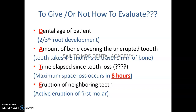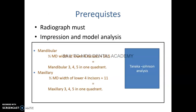After examining the permanent tooth, if there is no bone covering, don't assume the tooth will erupt — also check root development. The third factor is Time elapsed since tooth loss. Maximum space loss occurs within the first six months, and is greatest with loss of the second deciduous molar. Also consider Eruption of neighboring teeth — when the first molar is actively erupting and tooth E or D is lost, space loss is maximum.